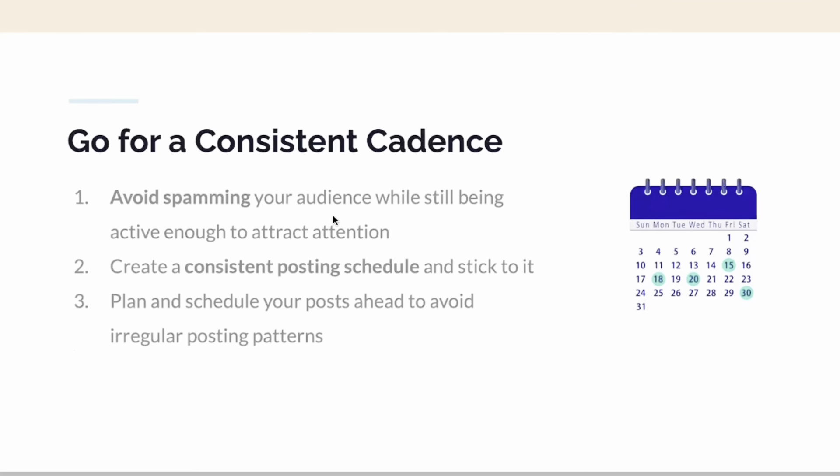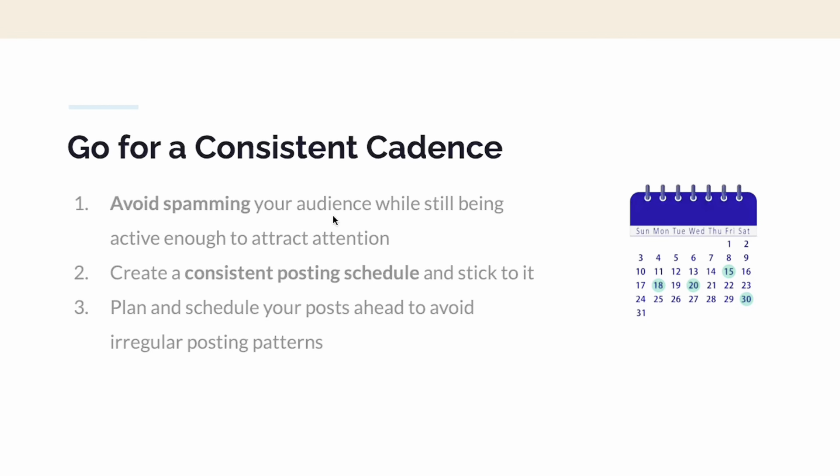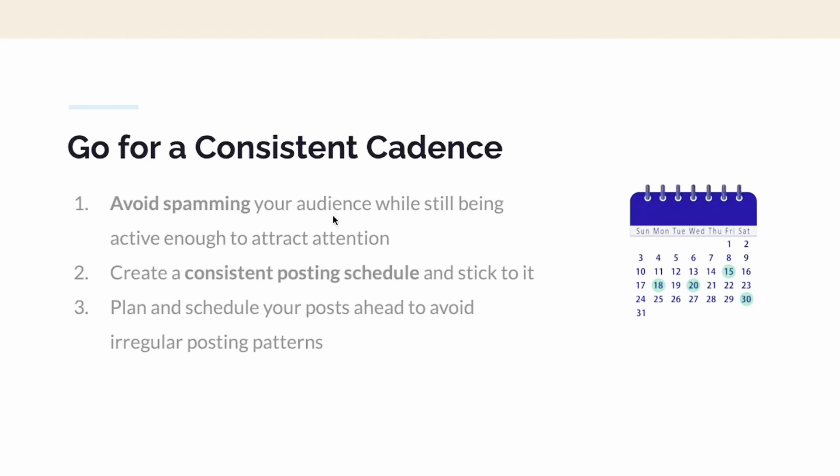Another secret I want to offer is that you should go for consistent cadence. Other creators talk about batching content and making a series — it's essentially the same thing. You can avoid spamming your audience while still being active enough to attract attention by creating a consistent posting schedule and sticking to it. This will help you plan and schedule posts ahead and avoid irregular posting patterns.